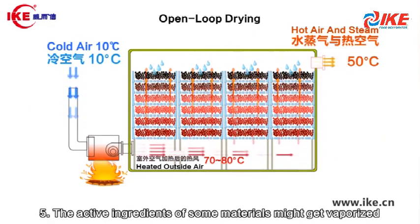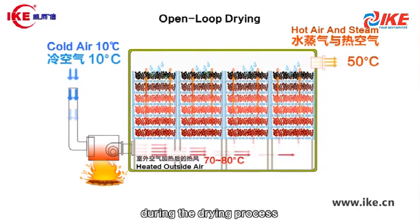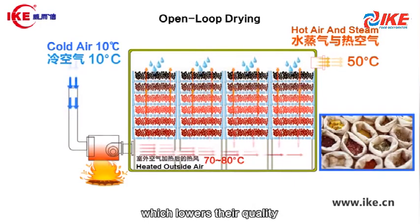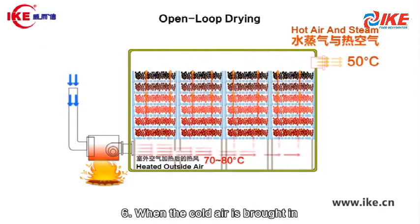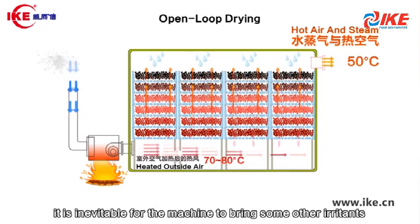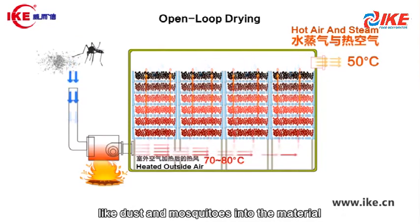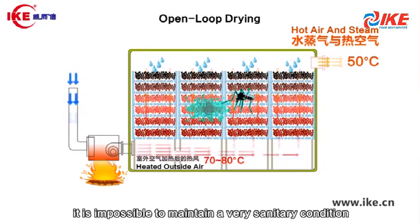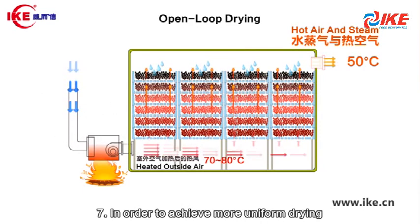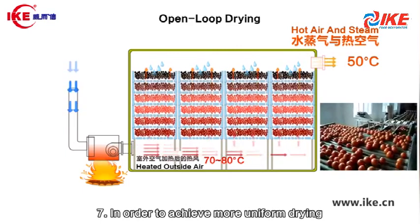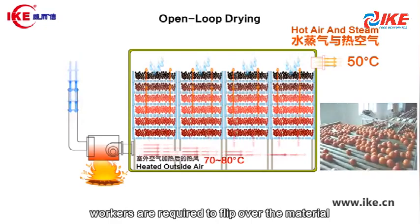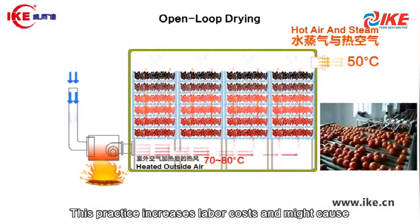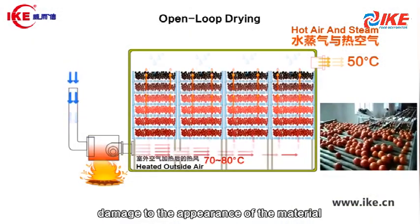Fifth, the active ingredients of some materials might get vaporized during the drying process, which lowers their quality. Sixth, when the cold air is brought in, it is inevitable for the machine to bring some other irritants like dust and mosquitoes into the material, making it impossible to maintain a very sanitary condition. Seventh, in order to achieve more uniform drying, workers are required to flip over the material, which increases labor costs and might cause damage to the appearance of the material.